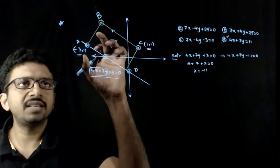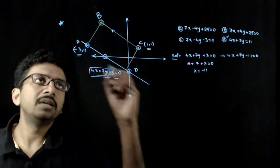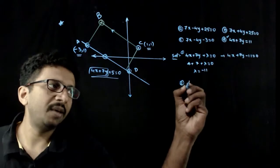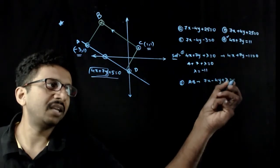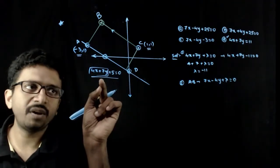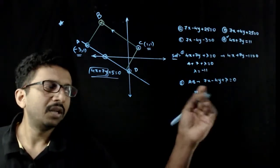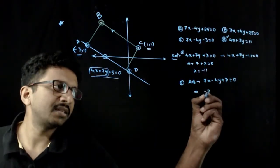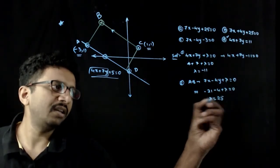Now, if I want the other equation — this is a line perpendicular to the given line passing through (-3, 1). To find the equation of AB: AB is perpendicular to this line, so AB will be of the form 7x - 4y + λ = 0, because the given line is 4x + 7y + 5 = 0 and the perpendicular line will be of the form 7x - 4y + λ = 0. To find λ, substitute (-3, 1): -21 - 4 + λ = 0, so λ = 25.